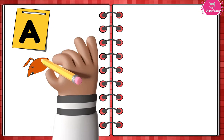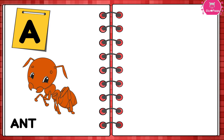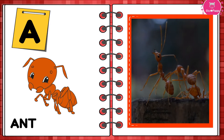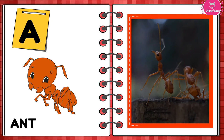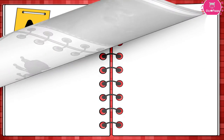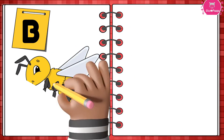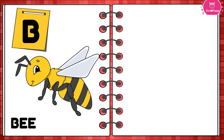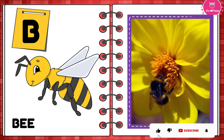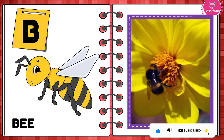A is for Ant. A is for Ant. Ant. B is for B. B is for B.